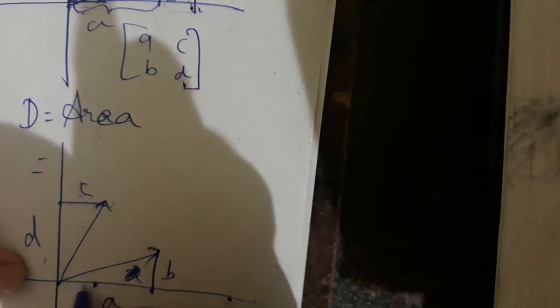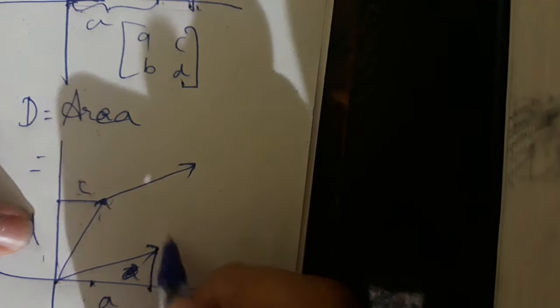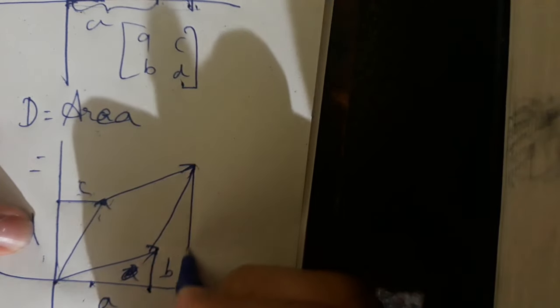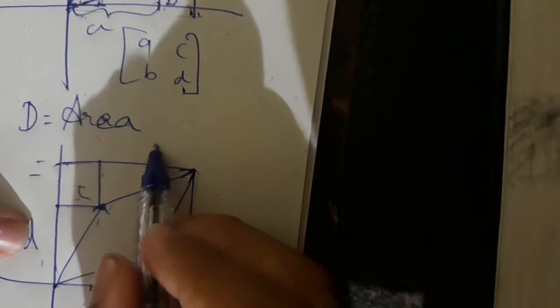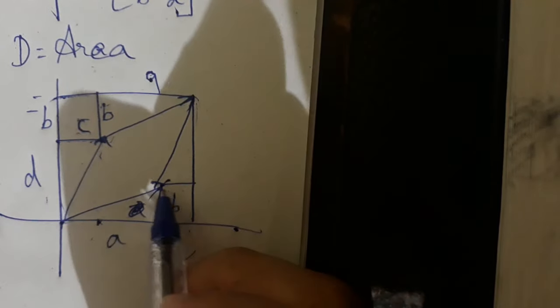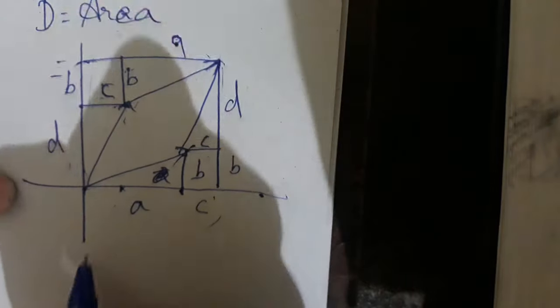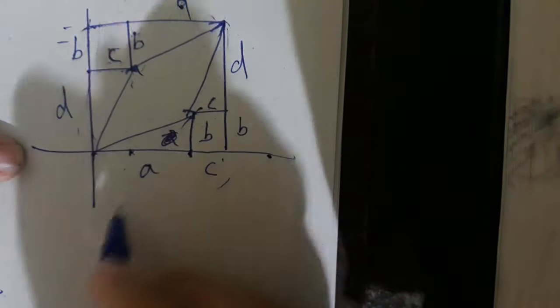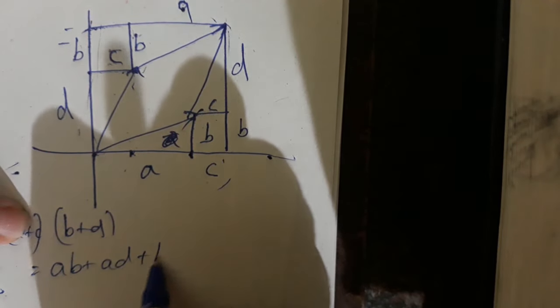This is different — it is the same; this will give this area. This is B plus D, this is A plus C. Now we have to multiply the total: AB plus AD plus BC plus CD.